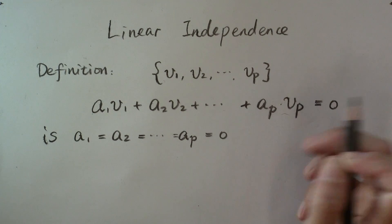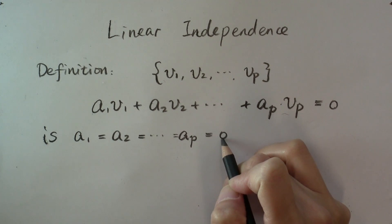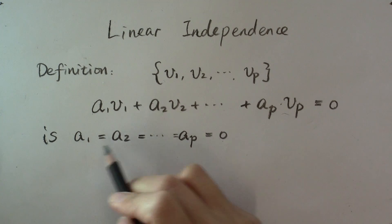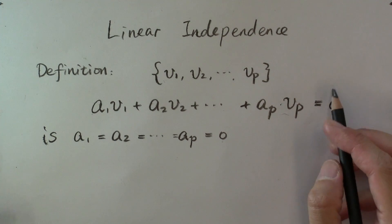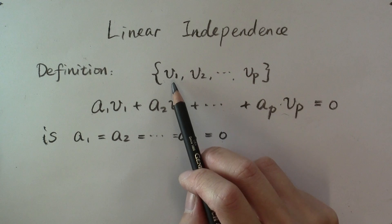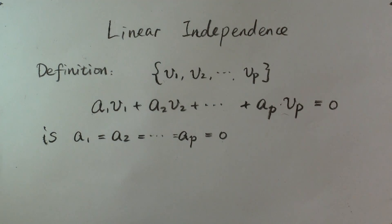Here, these two zeros mean different things. This zero is a scalar, it's just a number, but this zero is a zero vector. The zero vector is of the same length as all these vectors, v1 to vp.